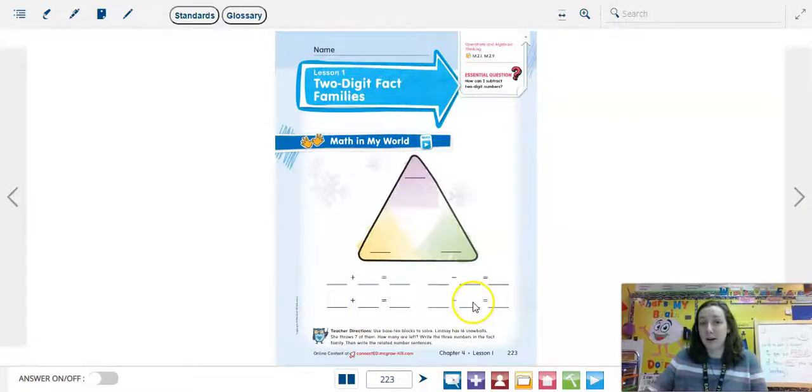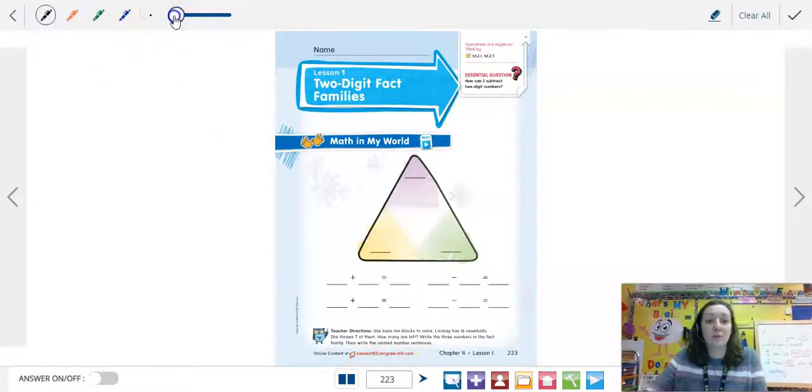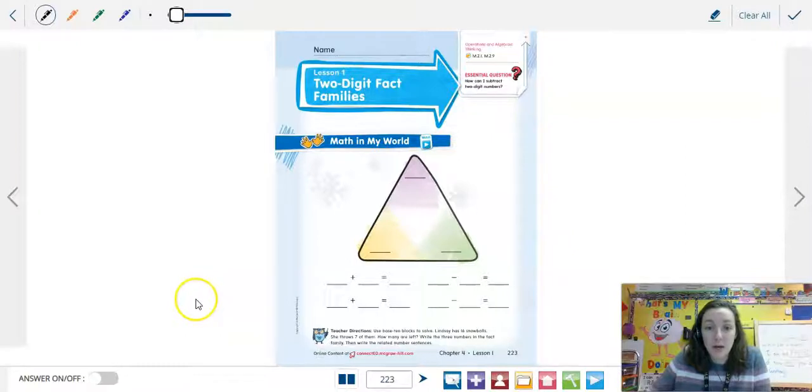So you should be pretty familiar with fact families. We're just now going to be working with two digits or bigger numbers. So on page 223, here's what we are going to do for our fact family. It says that Lindsay has 16 snowballs. She throws seven of them. How many are left?